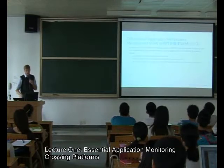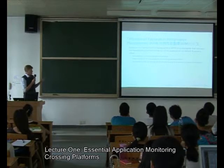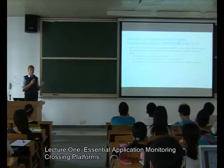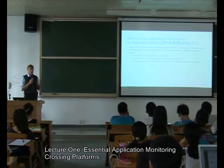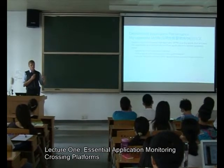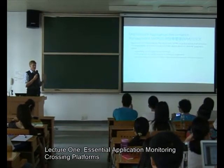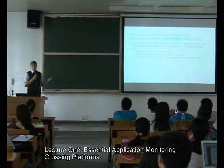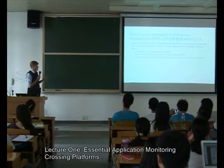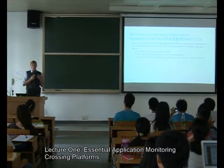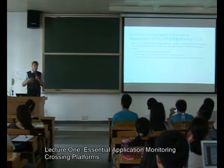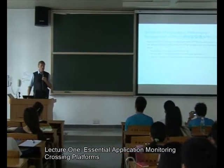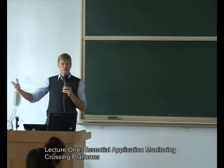Application performance management means ensuring the availability and performance of an application to deliver business value. Availability means: is it running, is it up or down? Performance means: is it running as expected, how long do URLs take, how many transactions can we process? Business value is harder to assess — for example, how many orders have you processed? If I'm running an online bookstore, how many books did I sell today? That is a metric that tells me about business value.